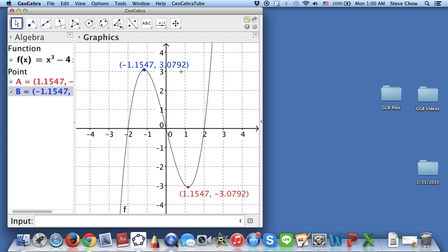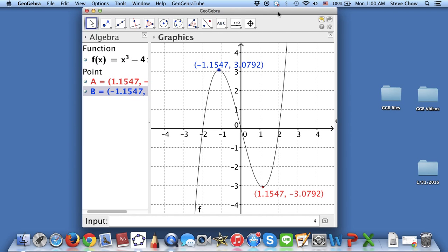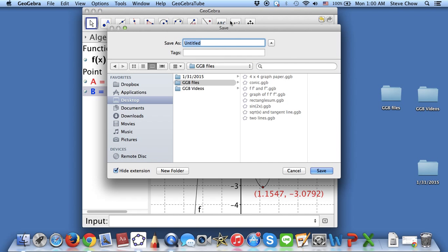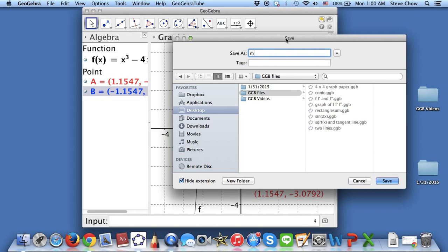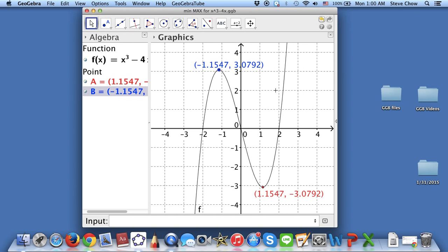So you can move it around, things like that. That's it. And I'm going to save this. This is going to be, because I have a function, this is min max for x to the third power minus 4x. That's it.